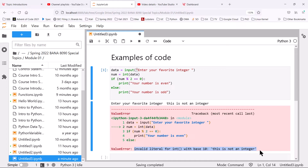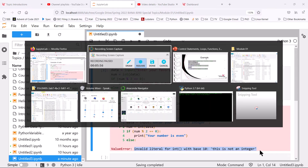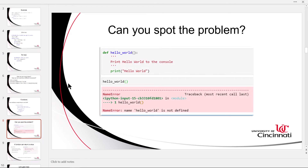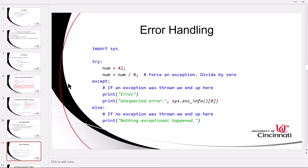This would be a decent place to put some error handling logic. Skipping ahead to slide 11, we introduce the try-except-else construct, which can also be considered control flow. If anything bad happens in the try block of code, we will end up in the except block and handle the error more gracefully than in that previous example.